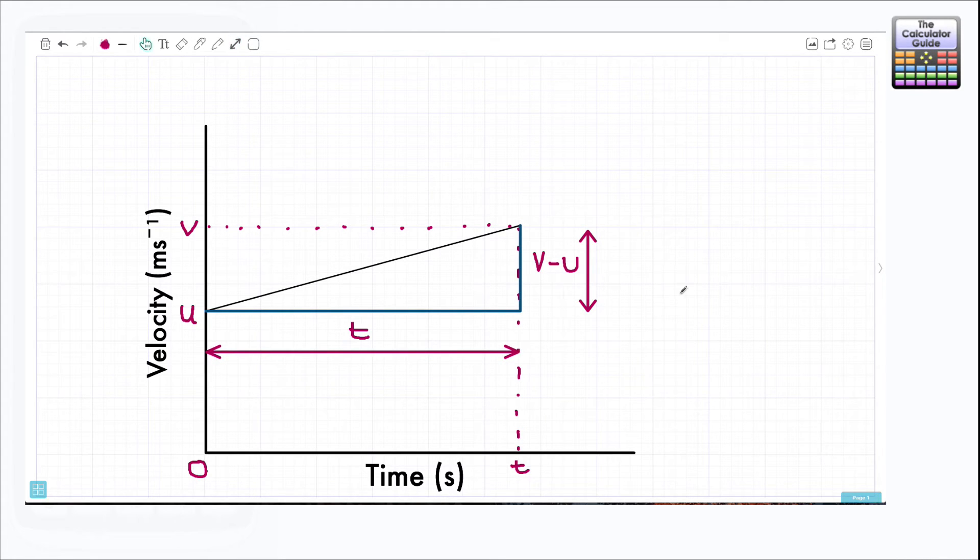So if we think about writing this as a formula, a little formula to describe our acceleration, well we would write it as a equals the change in y, which in our case is v minus u, over the change in x, which is just the value for t in this particular case. So here we have a formula that describes acceleration, a equals v minus u all over t.